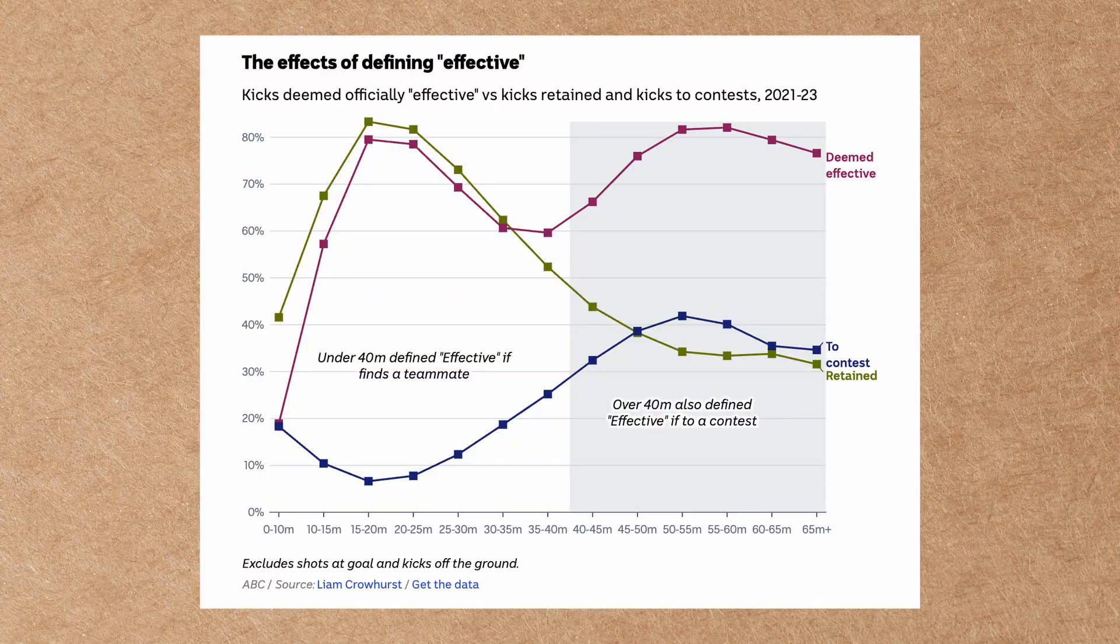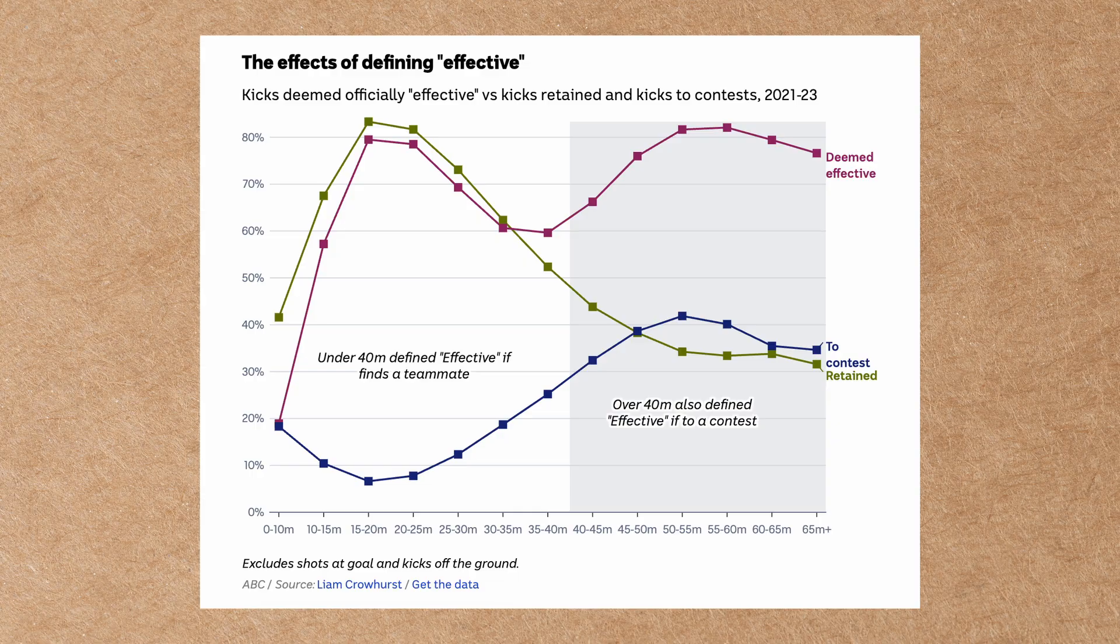Thanks, Liam. That was much better than my explanation. I've got some more questions for you in a minute, but I want to touch on some other things just quickly. One of the main things that stood out to me in that article was that kicks over 40 meters are deemed 66% effective, whereas it appears that they are only retained about 44% of the time.